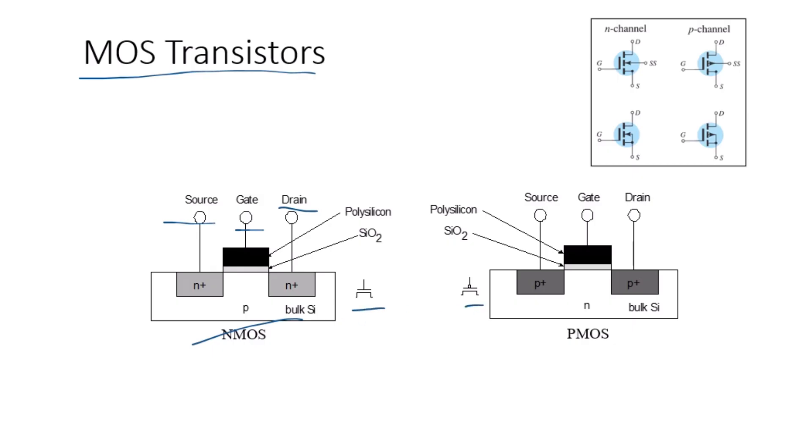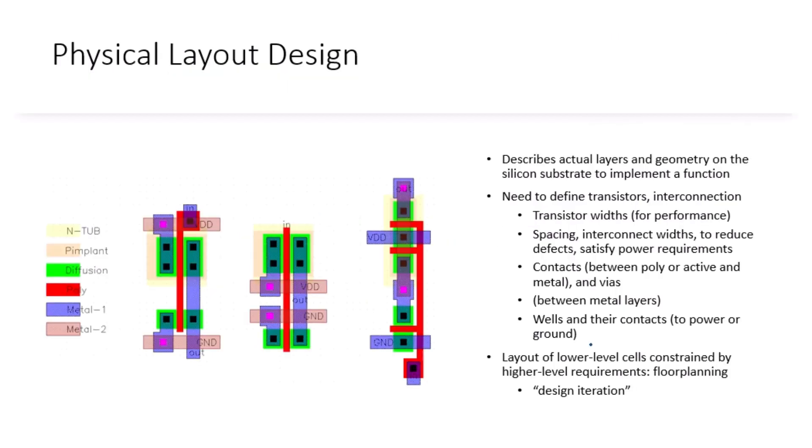Both NMOS and PMOS transistors are used in CMOS circuits with complementary behavior. NMOS conducts when the gate is high and PMOS conducts when the gate is low. Now let's talk about how these MOS transistors are physically implemented in a CMOS layout. Layout design involves representing the actual layers and geometry on a silicon substrate.